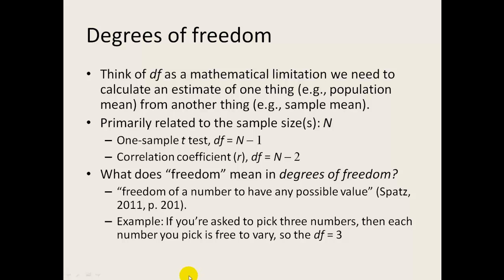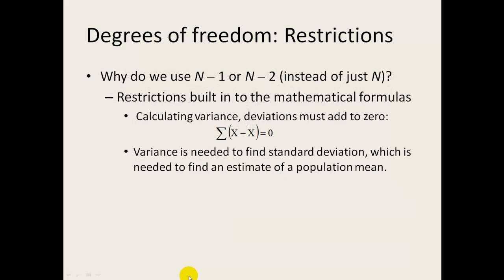So just in summary, why do we use n minus one or n minus two instead of just n? It has to do with the restrictions built into the mathematical formulas. For example, when we calculate variance, the deviations must add to zero. The sum of those deviations is zero. That's a limitation. And since we use variance to find standard deviation, which is needed to find the estimate of a population mean or a population standard deviation before the population mean, that limitation plays a role in our degrees of freedom calculation. So it's pretty theoretical. I think what I would want you most to know is that there are different degrees of freedom for different types of tests, and it has to do with how many sets of data you're actually working with in your calculations when it boils down to it.